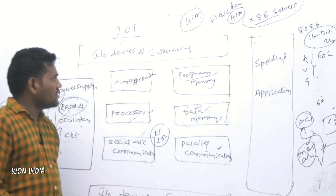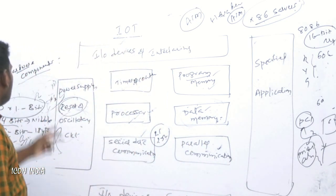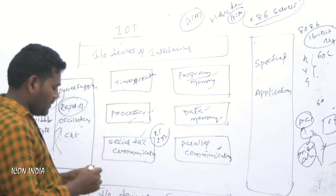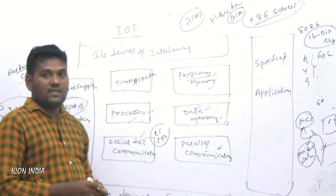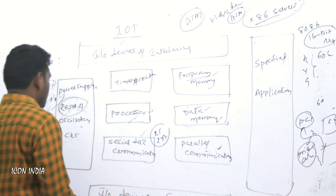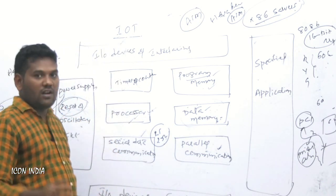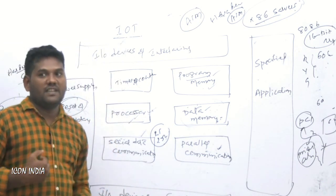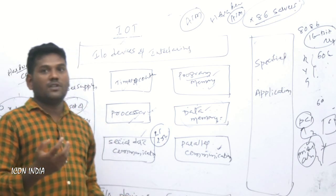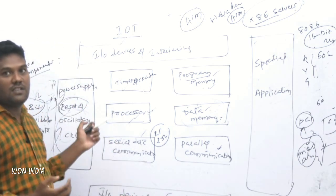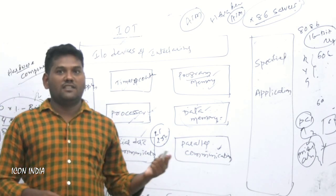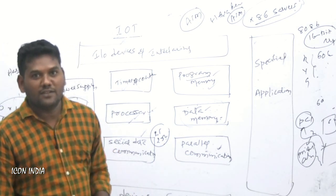All those applications are considered as hardware components in the embedded system. This is also one of the important scopes of Internet of Things, because in the third unit we go further with Raspberry Pi programming. All those components will be considered in Raspberry Pi.